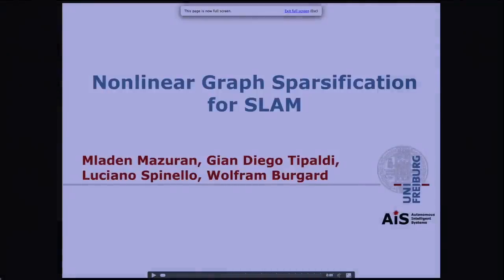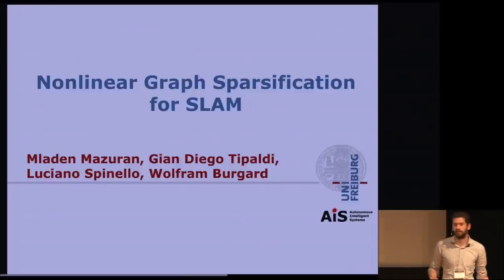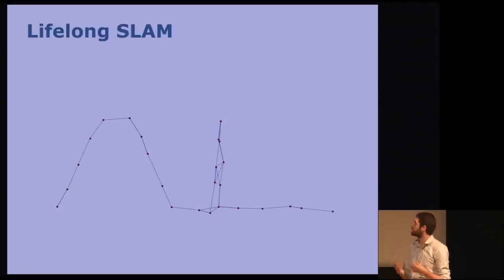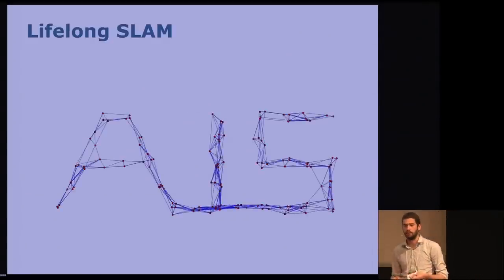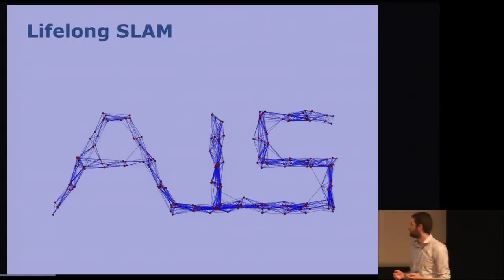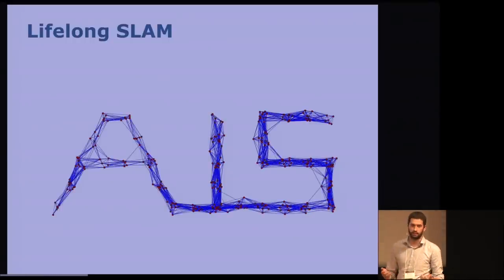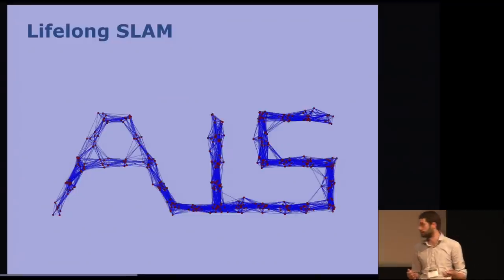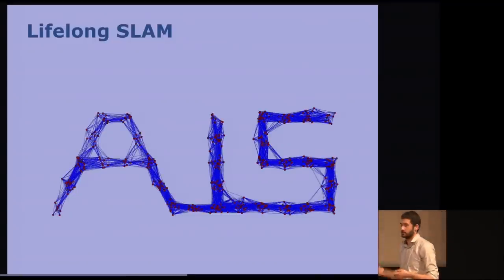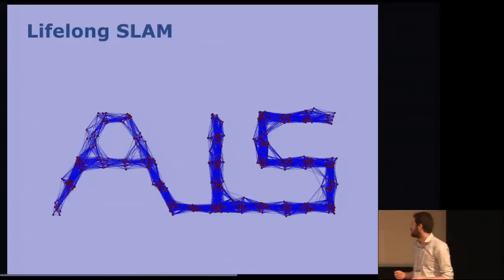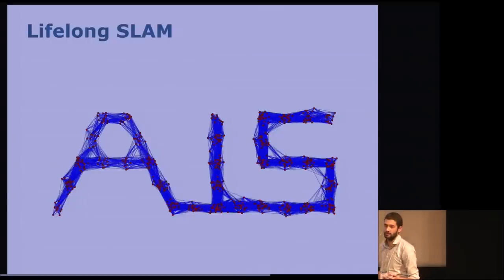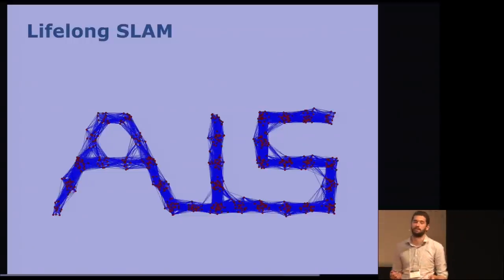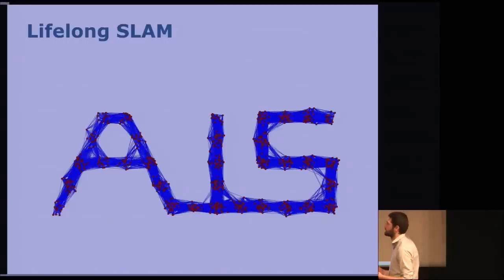Hello, everyone. I'm Mladen from the University of Freiburg, and I'd like to introduce to you our work on sparsification with nonlinear factors in the context of SLAM. So, consider a situation where you have a lifelong SLAM scenario. As the robot moves, it will keep adding nodes and edges to a factor graph to keep itself updated with its own position in the world. Unfortunately, as you can see also in the movie, as time goes forwards, the number of nodes and edges grows unbounded. Therefore, at some point, it is necessary to throw away some information to keep efficiency for computation.